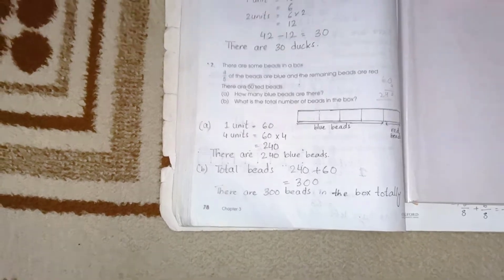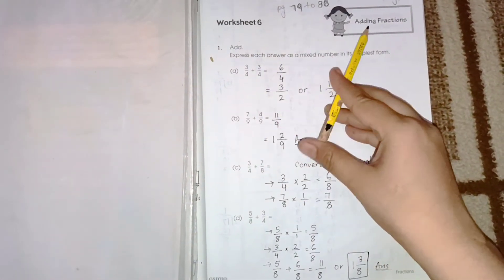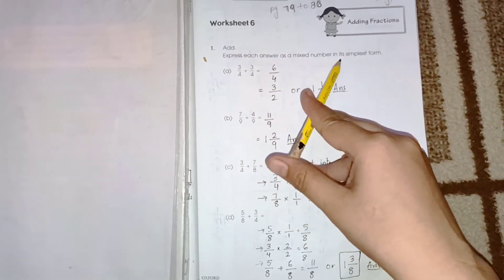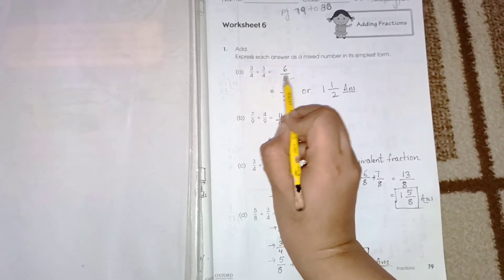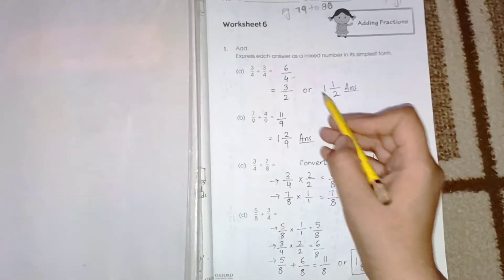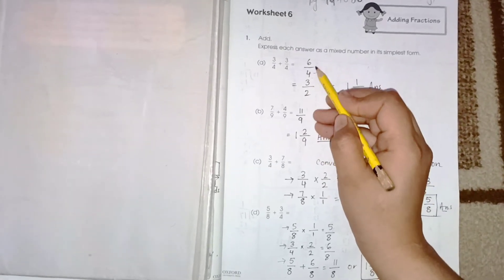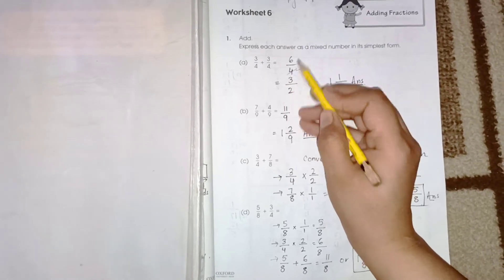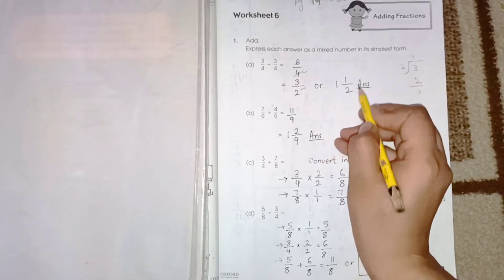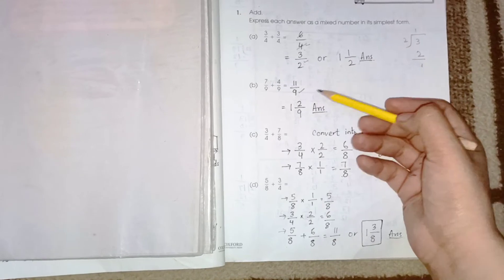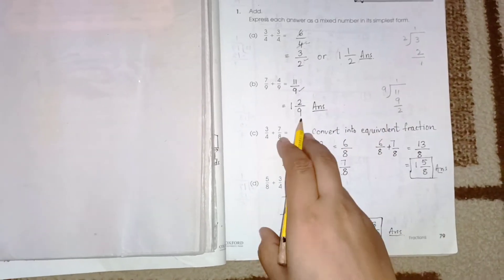Page number 79. We have Worksheet 6: Adding Fractions. Express each answer as a mixed number in its simplest form. If the denominator is the same, take only one common denominator. 3 plus 3 is 6, so the answer is 4 upon 6. Simplify by dividing by 2 to get 2 upon 3, or express as a mixed number. For the next problem with the same denominator, 7 plus 4 is 11 upon 9, which as a mixed number is 1 and 2 upon 9.